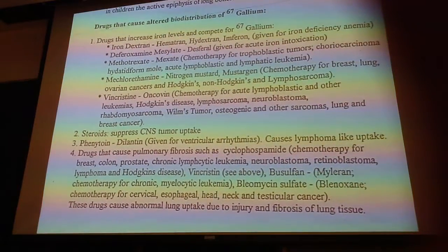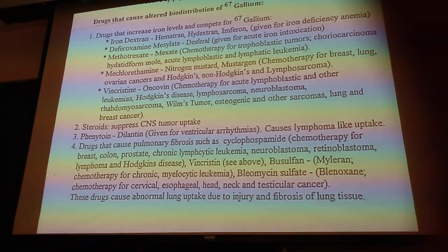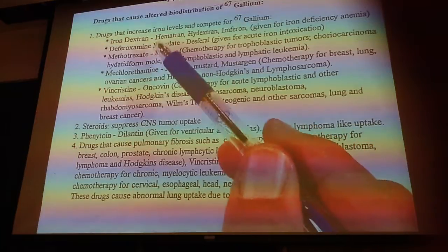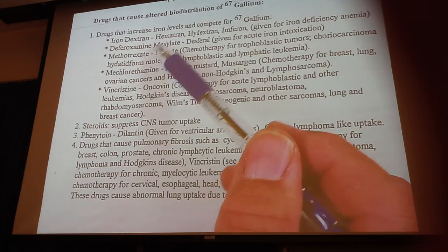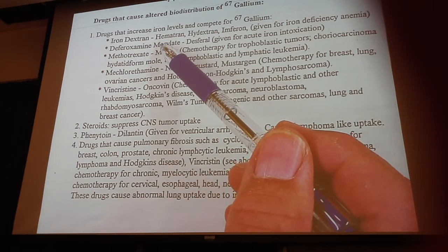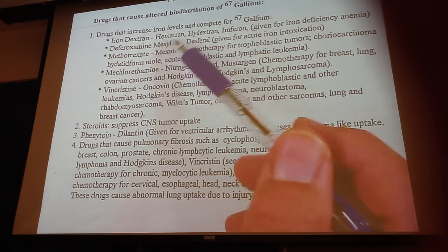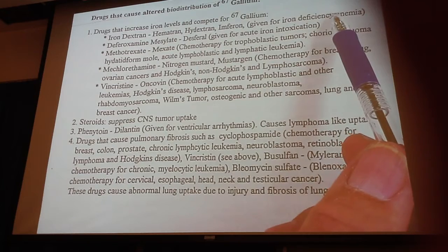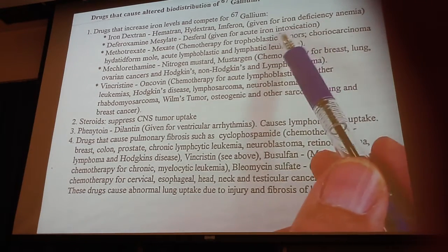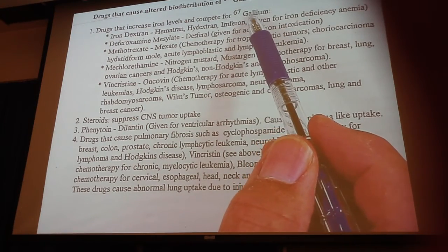It's important to ask your patient what drugs they're taking, especially with gallium. There are certain drugs that they give patients — like for iron deficiency anemia — that compete for the binding sites. If iron is given to a patient as a vitamin or mineral supplement, it's going to compete for the binding sites, which means the gallium won't be taken up properly.